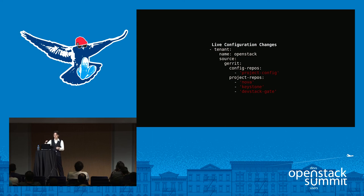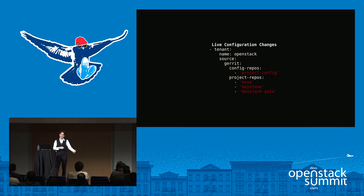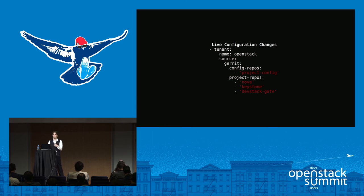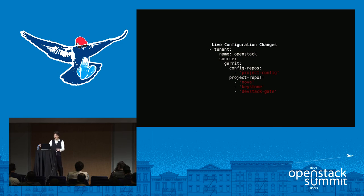Zuul will actually pull its configuration from all of these repositories. The reason there's a config repository and project repository difference is there are some things we still want to manage centrally — for instance, jobs that require authentication credentials. We can't have somebody uploading a job that says 'print out the authentication credentials.' So there is a difference between the config and project repositories. But Zuul, in general, in most cases, will be able to pull its configuration from any repository listed in this config.